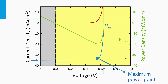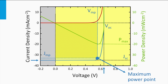The solar cell performs best at its maximum power point. The voltage at this point is called Vmp and the current density is called Jmp. The maximum power density Pmax equals Vmp times Jmp — in other words, the shaded area under the maximum power point in the JV plot represents the power density generated.